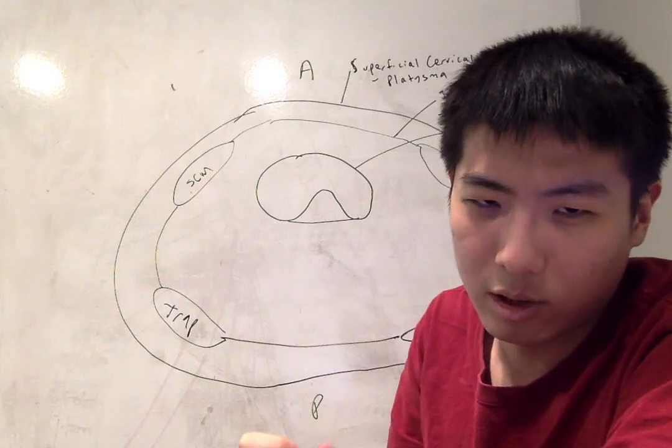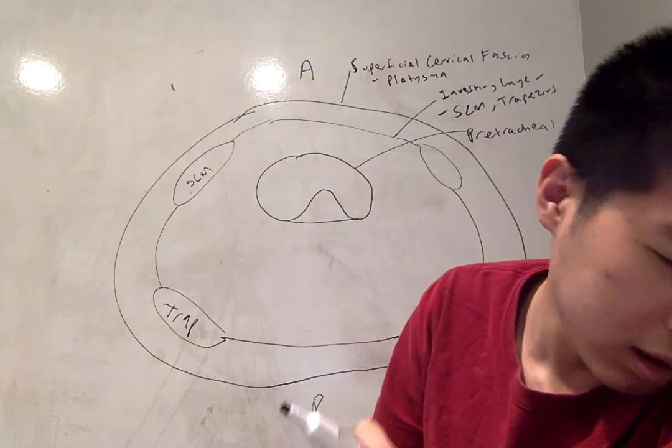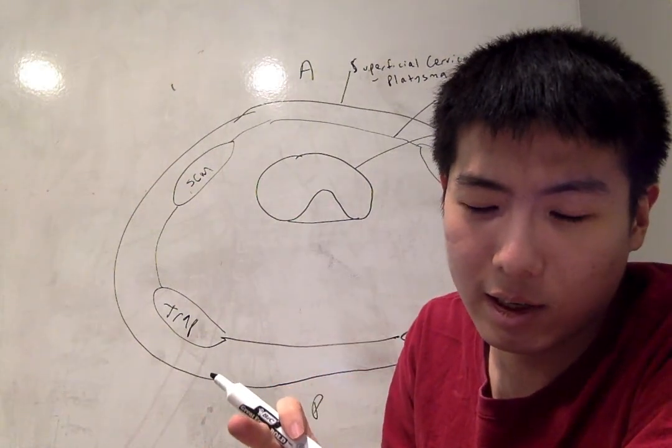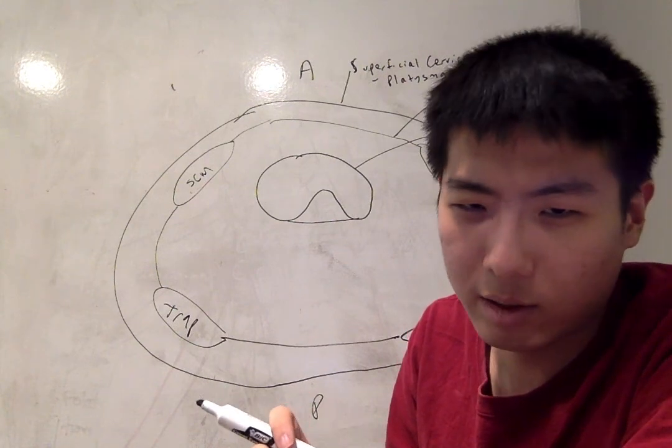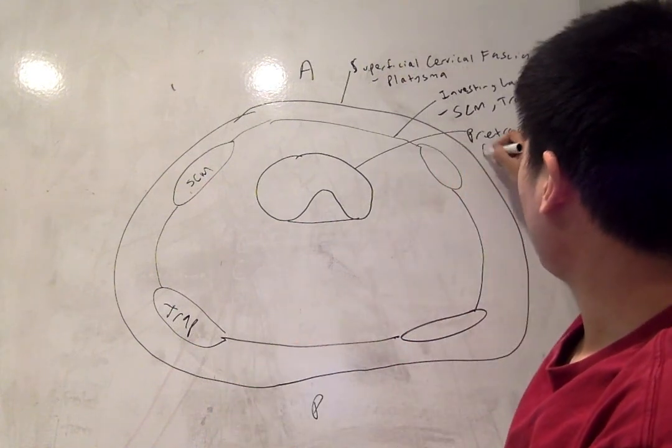So the pre-tracheal layer has two portions actually, a visceral and a muscular portion. The visceral portion surrounds the thyroid glands and the trachea and esophagus.